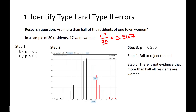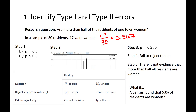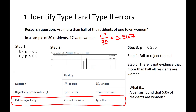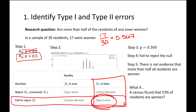What if we later obtain census data? A census collects data from everyone — the population. What if a census found that 53% of residents are women? In that case, our earlier conclusion was incorrect. We said there was not evidence that the population proportion was greater than 0.5, but in reality it is. Our decision was to fail to reject the null hypothesis, but in reality the null hypothesis was false. It looks like we made a type 2 error.